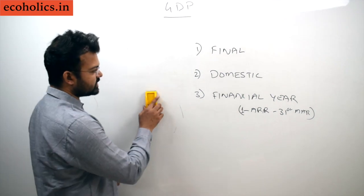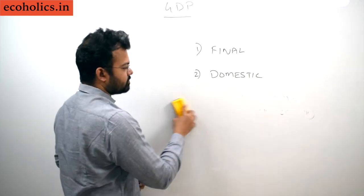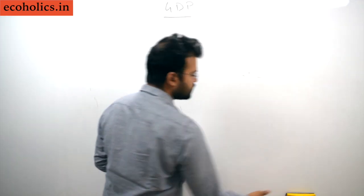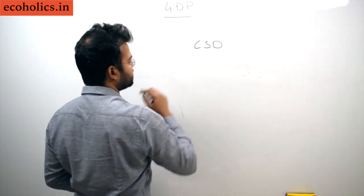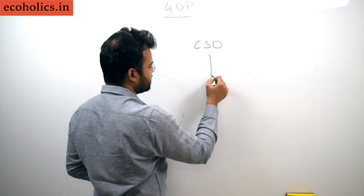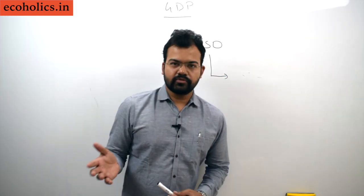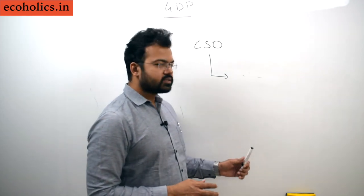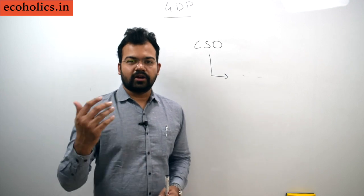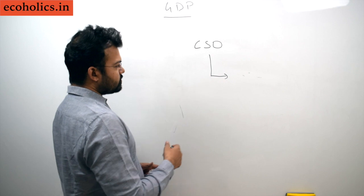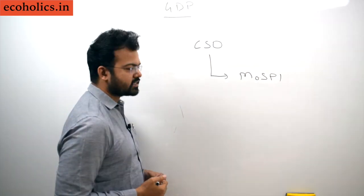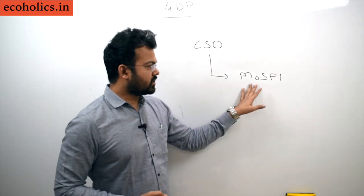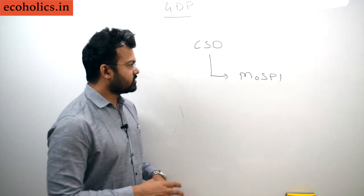Now, who calculates GDP in India? The Central Statistical Office, CSO, calculates GDP for India. The methodology was changed in the year 2015, integrating the national system of accounting with the international system of accounting given by the United Nations. CSO works under the Ministry of Statistics and Programme Implementation, popularly known as MOSPI.